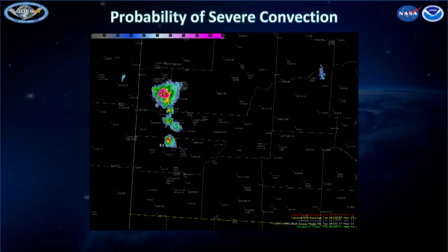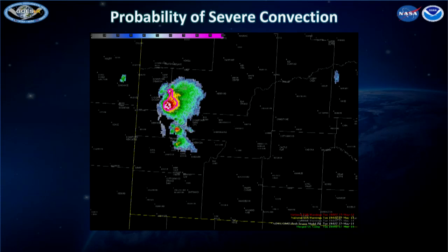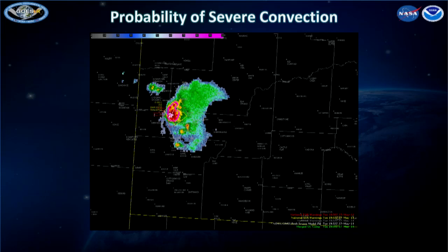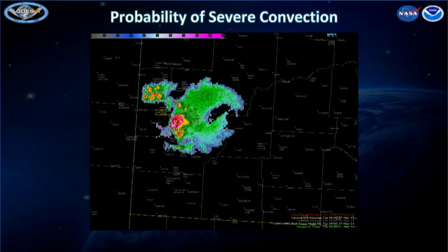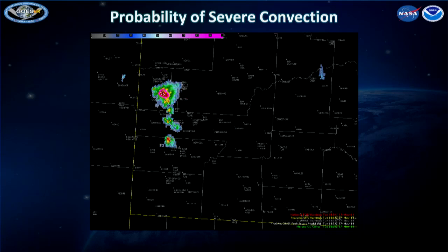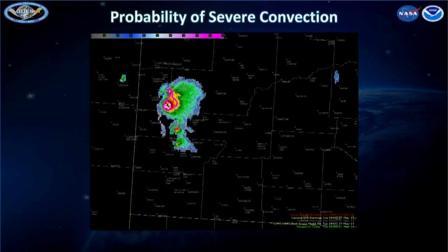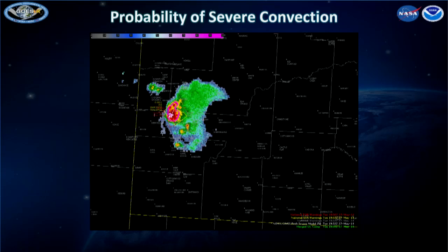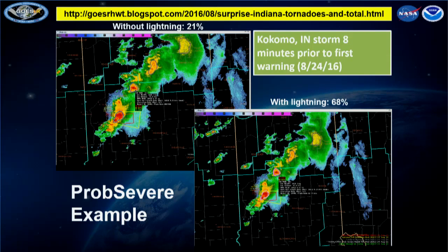Here's the ProbSevere algorithm, being demonstrated in our Hazardous Weather Testbed. It takes radar-estimated maximum hail size, cloud top growth rate, and cloud top emissivity — how cold is that cloud top — and now we've added lightning jumps. For a tornadic storm example, the probability of severe was 21% without the lightning signature, versus 68% when you included the lightning signature. Combining radar, satellite, lightning, and NWP instability fields together gives us the best information to diagnose and characterize a particular storm.